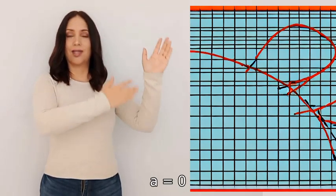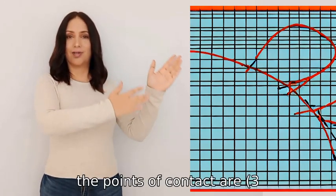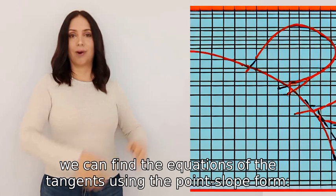Therefore, the points of contact are (3,3) and (0,0). Now we can find the equations of the tangents using the point-slope form.